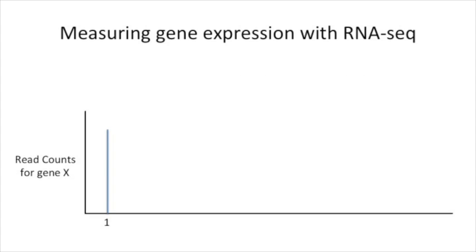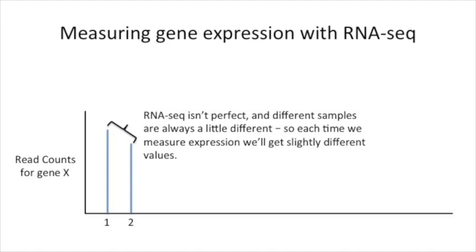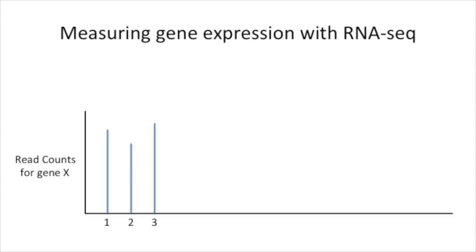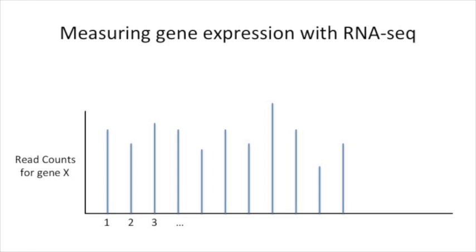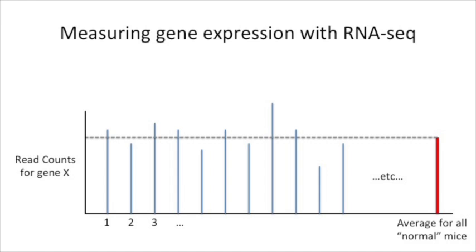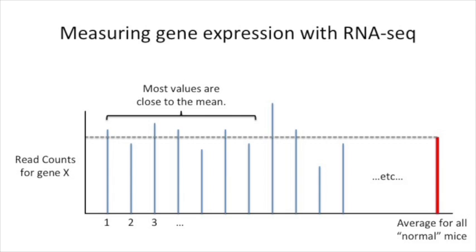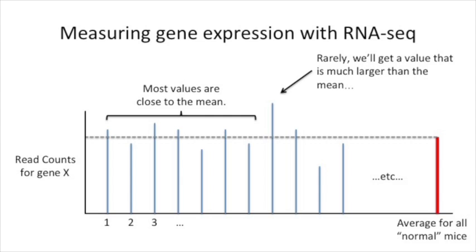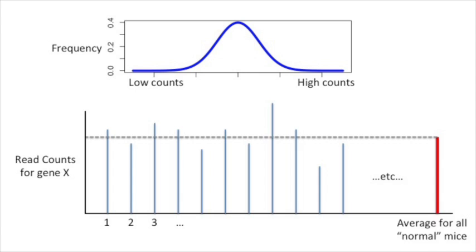Here's our measurement for the first mouse that we do this RNA sequencing on, and here's the measurement for the second mouse. RNA sequencing isn't perfect, and different samples are always a little different, so each time we measure expression we'll get slightly different values. Here's the measurement for the third mouse, and here are the measurements for a bunch of mice. If we measured all normal mice, we'd be able to calculate the average for all normal mice. Most of the values are going to be close to the mean. Rarely, we'll get a value that is much larger or much smaller than the mean.